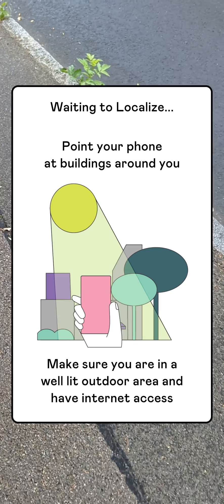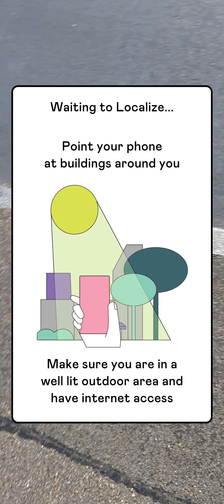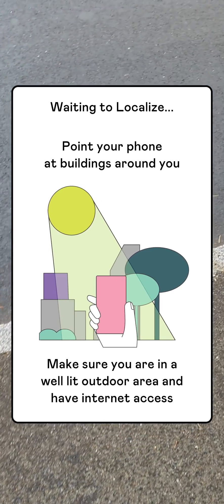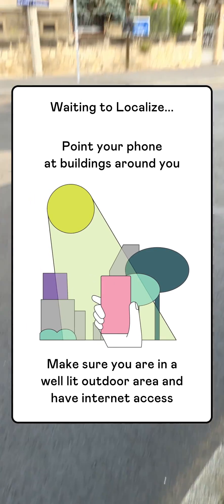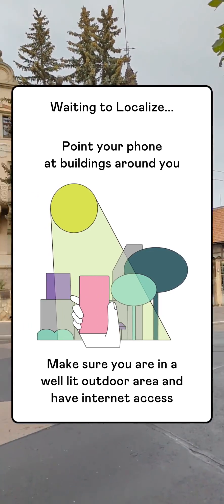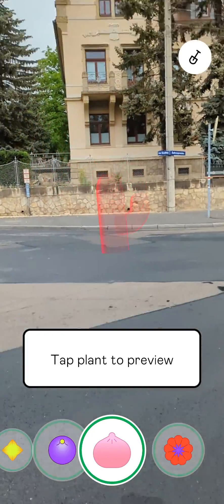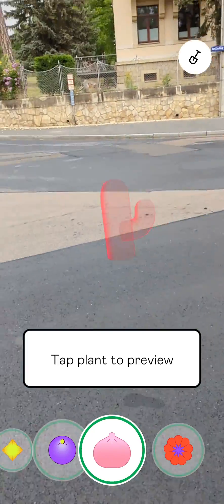So you look at this — it asks me now to localize where I am. And since it's using Street View, I'm just pointing it at buildings. You saw it found my position.